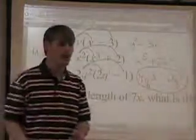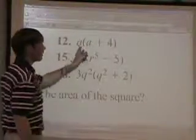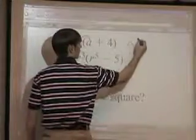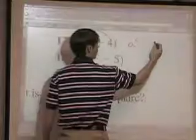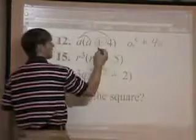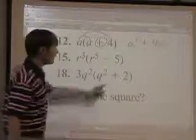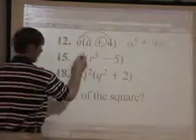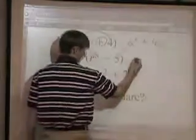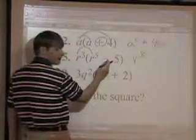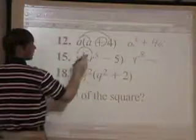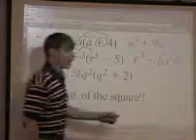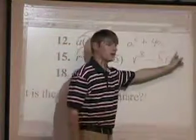The last three examples multiply a monomial times a binomial. A times a is a squared. A times 4 is 4a. Put the sign in, and you get a squared plus 4a. These aren't like terms — a squared and 4a have different exponents, so you can't combine them. Next: r cubed times r to the fifth is r to the eighth. Then 5 times r cubed is 5r cubed, and that's your answer. Again, they're not like terms — same variable but different exponent.